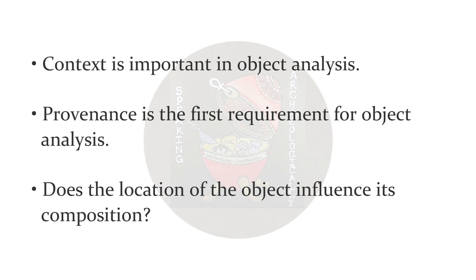When you look at the provenance, it is essential to ask yourself whether or not the location of the object found influences its composition. For instance, if you found a pottery sherd from somewhere, it's imperative to ask yourself whether the clay it's made of is found locally or was it imported from elsewhere. Are the materials of make locally available in that location? Or was the city a trade center? It's imperative to bear all that in mind when starting your object analysis and when looking at the provenance or the earliest known origin of something.